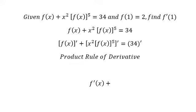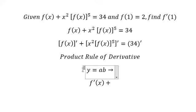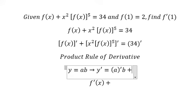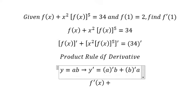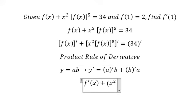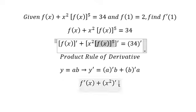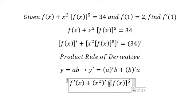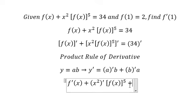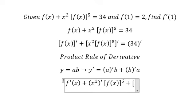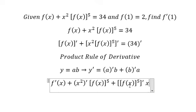The product rule means: when y equals a times b, the first derivative of y equals the first derivative of a multiplied by b, plus the first derivative of b multiplied by a. So in this situation, we will have the first derivative of x squared multiplied by f(x) to the power of 5, plus the first derivative of f(x) to the power of 5 multiplied by x squared.